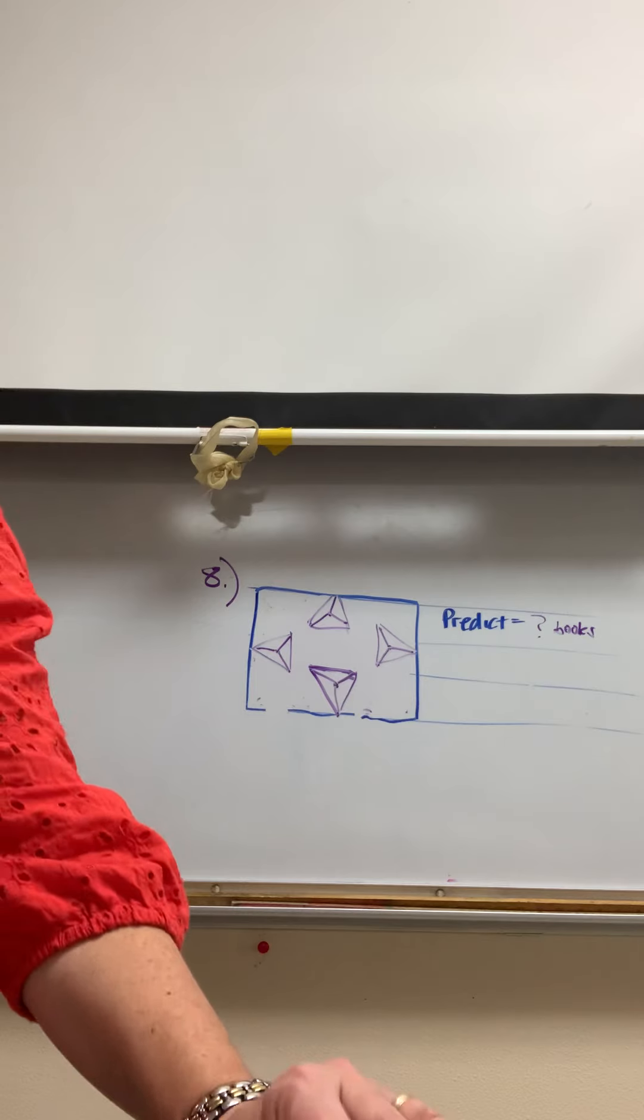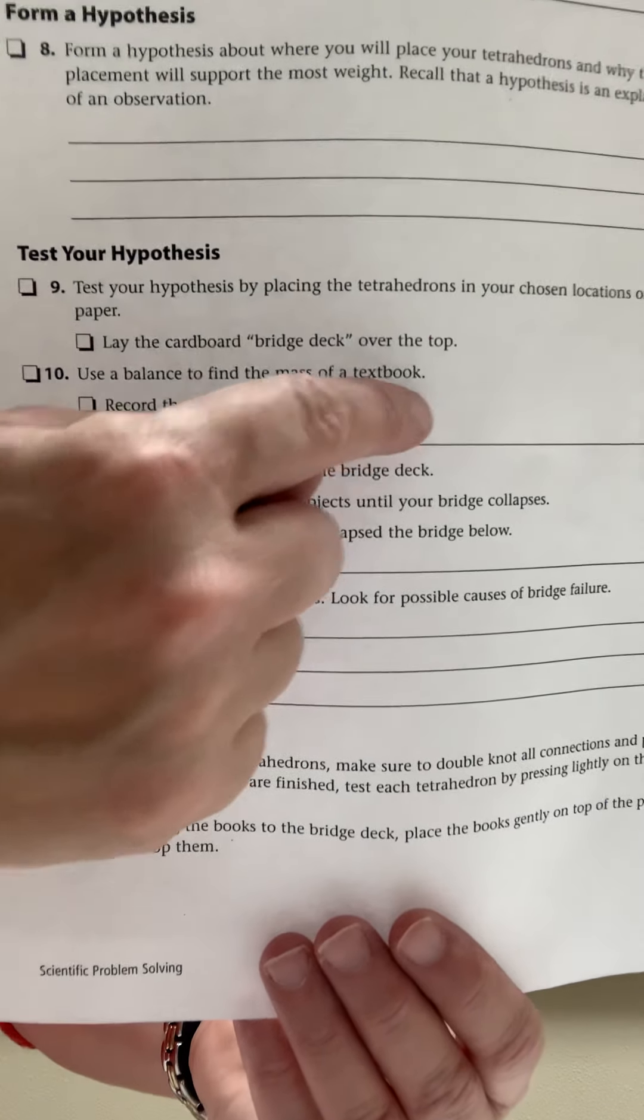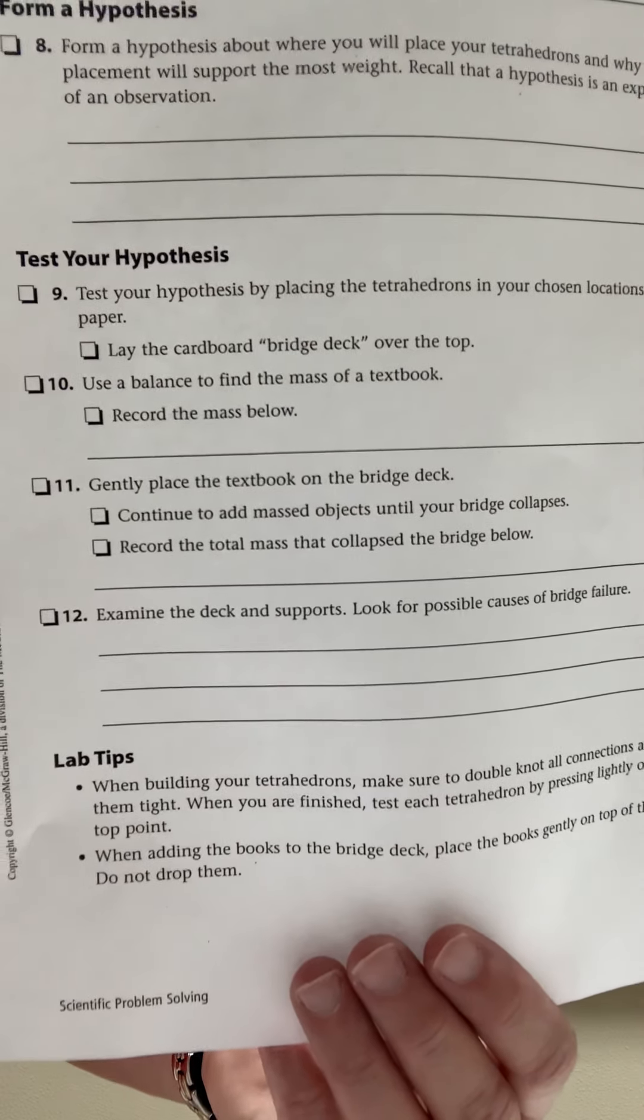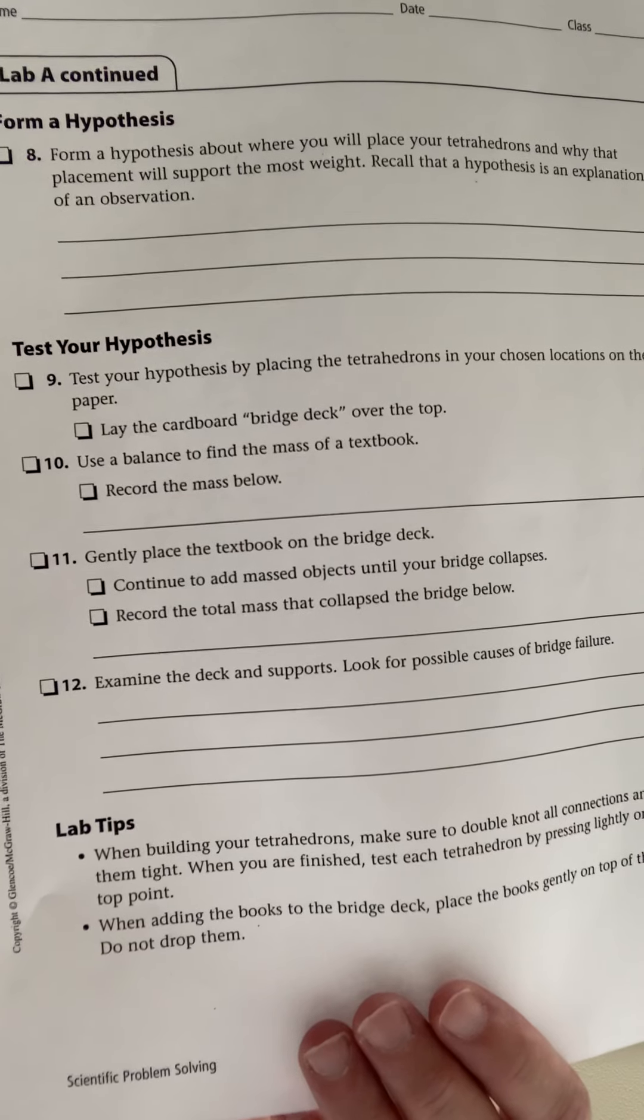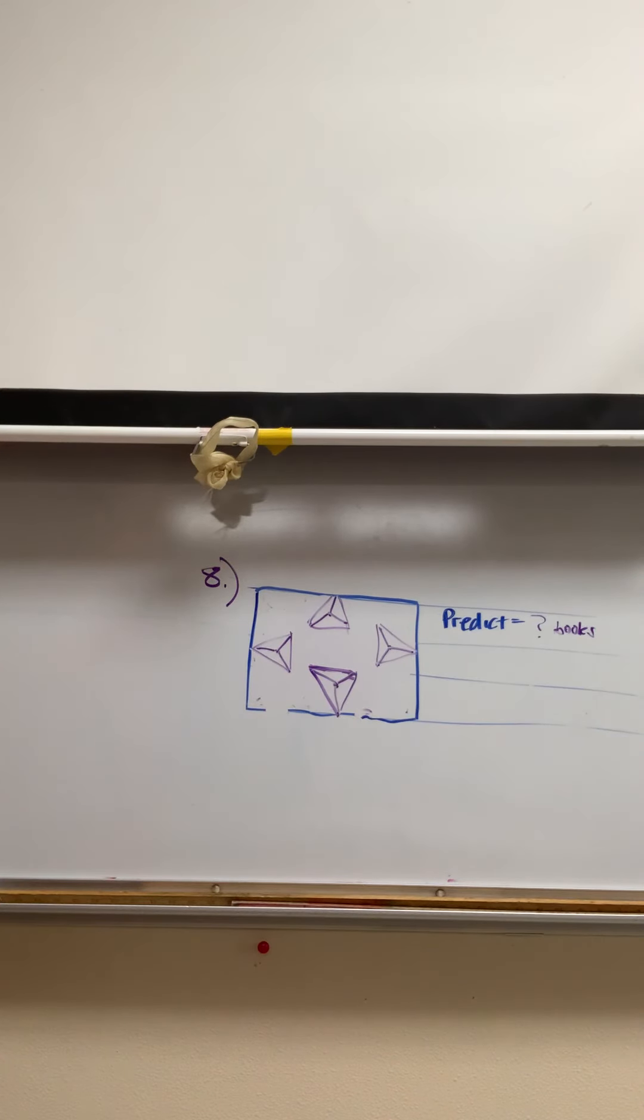Once you record it, you're going to write that down on number ten on your paper. It's going to say how much did your bridge hold, how many books. Then number eleven is actually recording how many books it held, and then number twelve, examine your supports and look for possible bridge failure.